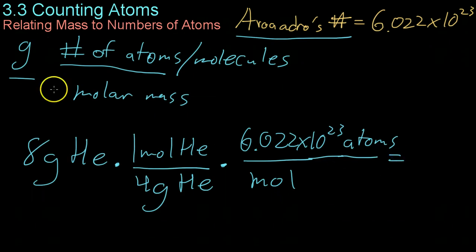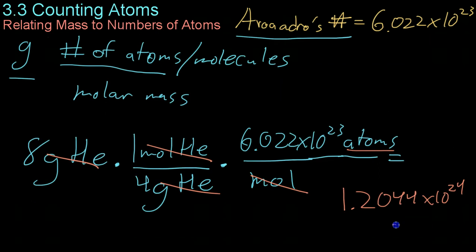And then what you'll notice is the grams will cancel out, because of one being in the numerator and one being in the denominator, the moles will cancel out, and all you're left with is atoms, so you know you set up the problem correctly. And you end up with, in scientific notation, 1.2044 times 10 to the 24th atoms of helium.